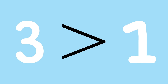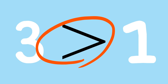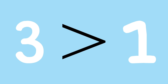So we can say that three is more, or greater than, one. This is the greater than symbol, which kind of resembles the mouth of a crocodile. So three is greater than one, and one is lesser than three.